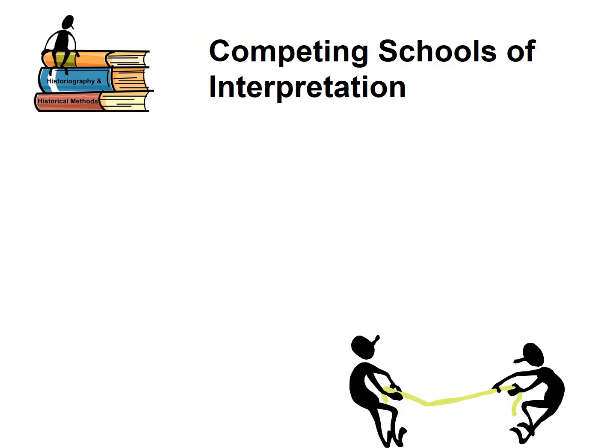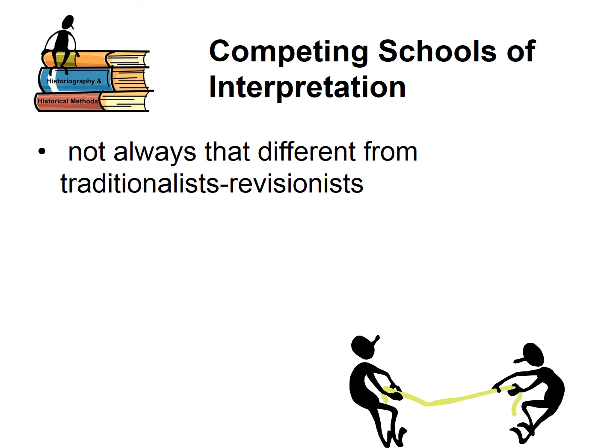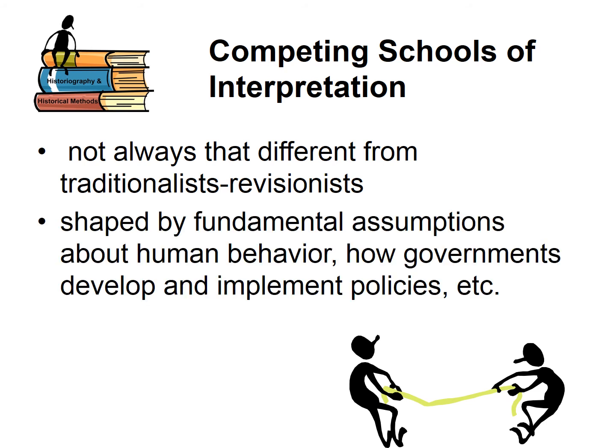Related to traditional versus revisionist, there are competing schools of interpretation. What we find is that sometimes historians divide into pretty recognizable categories, and their differences in interpretation are essentially shaped by fundamental assumptions about human nature or human behavior that separate them into different schools.